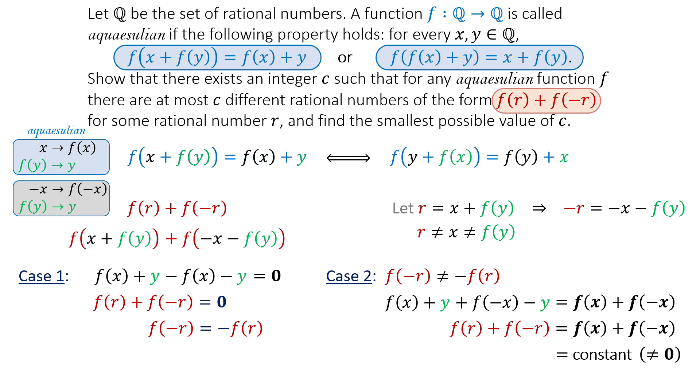Thus, there are two possible outcomes. If f(-x) = -f(x), the expression becomes zero. Otherwise, the expression has a constant value other than zero, regardless of the value of x.